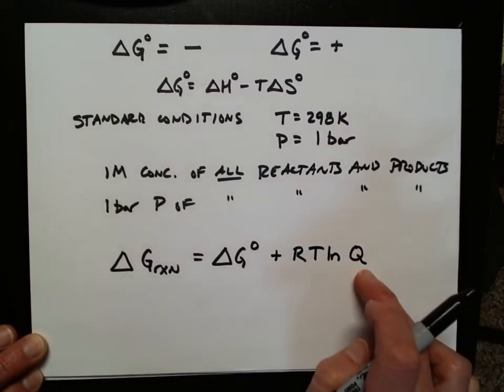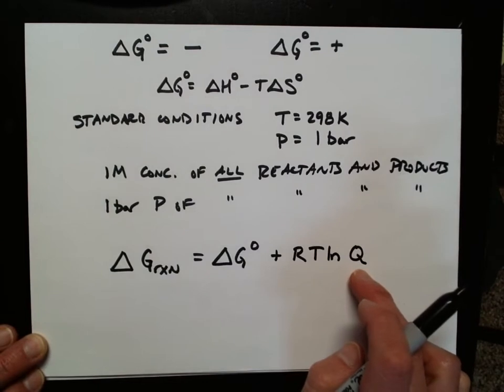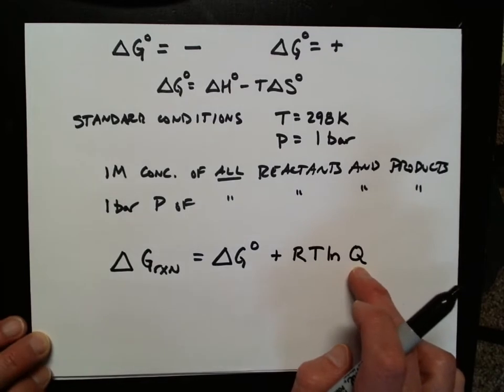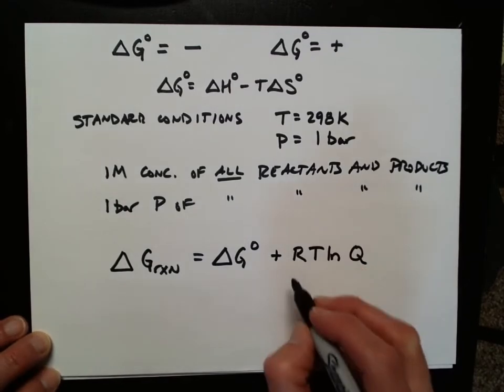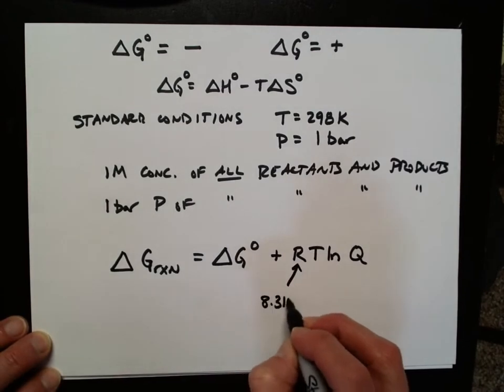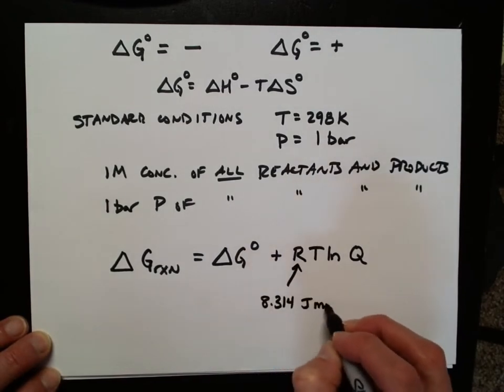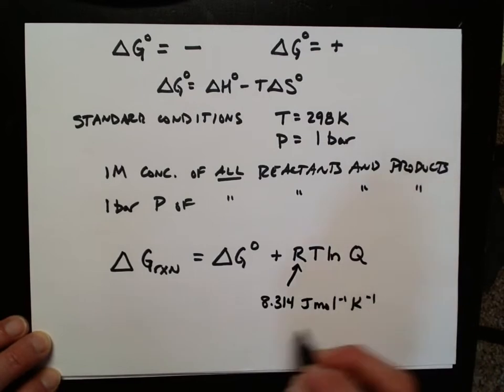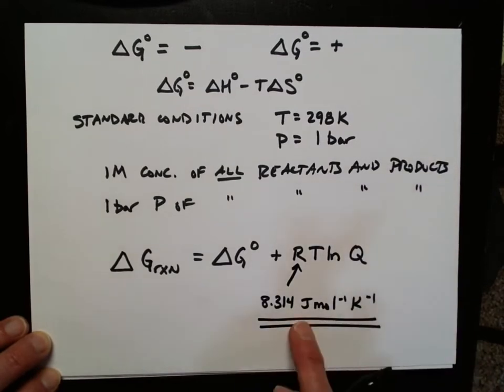You might remember what Q is from the equilibrium chapter. This is just the ratio of concentrations of reactants and products for a particular reaction. Now, in this case, R is going to be 8.314 joules per mole per Kelvin. This is the units of R that you're going to need to use.